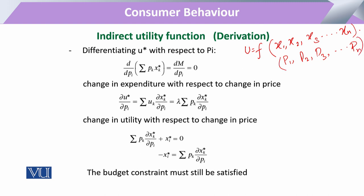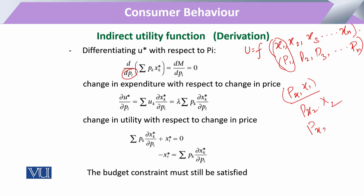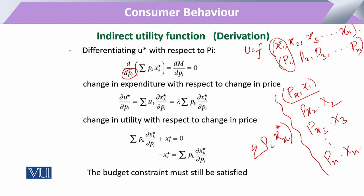To calculate the utility of the consumer we mostly take the utility maximization approach. When we take the change in utility due to the change in price, utility is indirectly equal to the expenditure incurred on the price of each commodity. The expenditure on x1, x2, x3, up to xn, when summed, equals the summation of all prices multiplied by their respective optimal bundles.